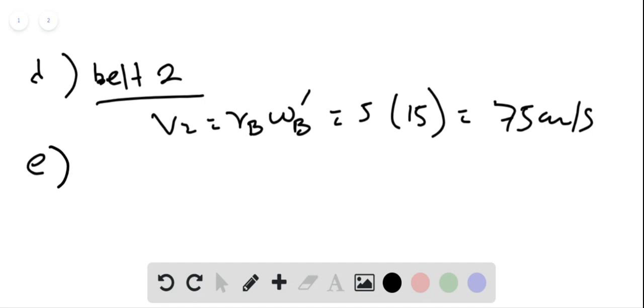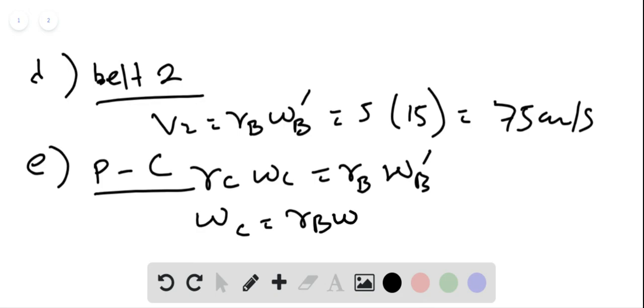Part E, the angular speed of pulley C is given by RC omega C equals RB omega B dash. From here, omega C equals RB omega B dash divided by RC. So this is 5 divided by 25 times 15 radian per second, which gives us 3 radian per second.